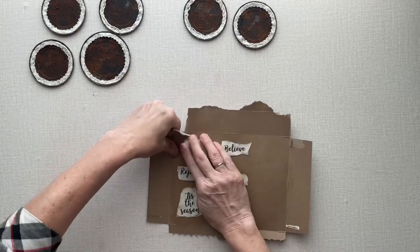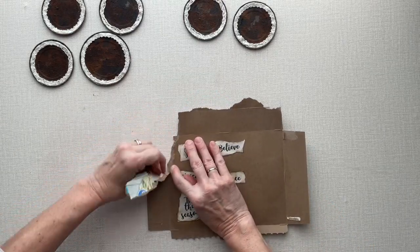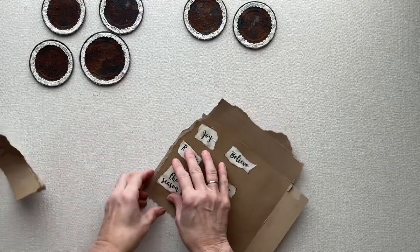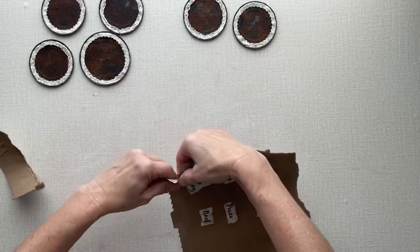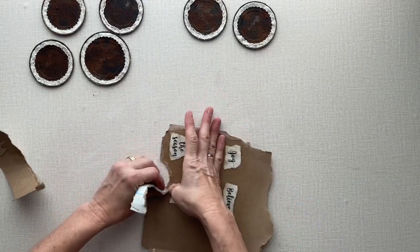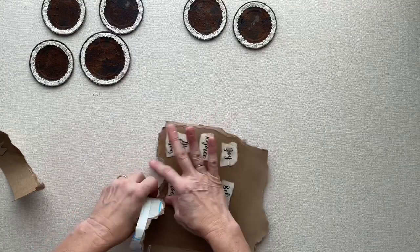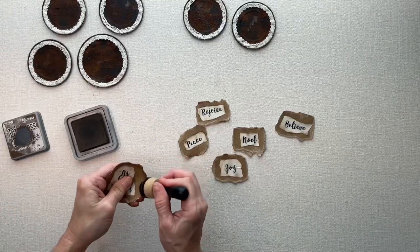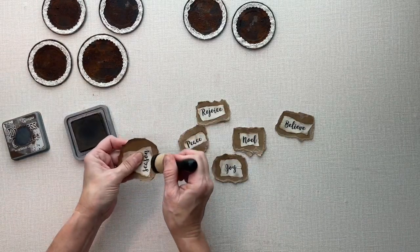Now that that's dry, I'm going to tear around the white paper, leave some of that brown showing, and then I want to distress those edges too.